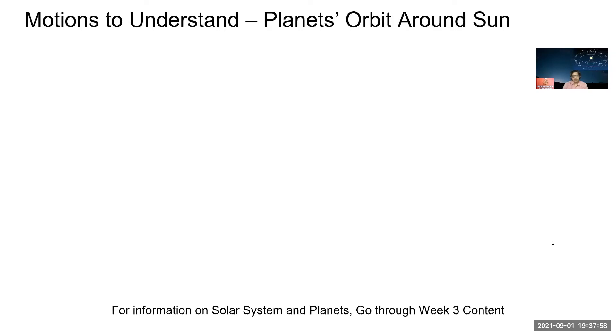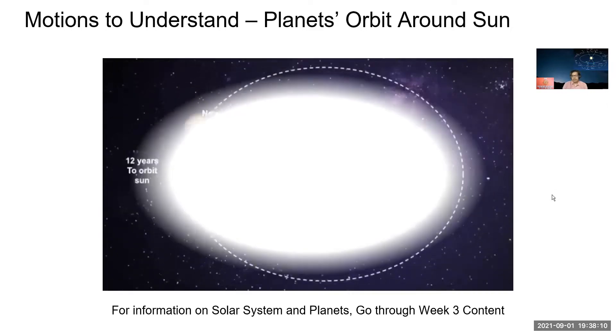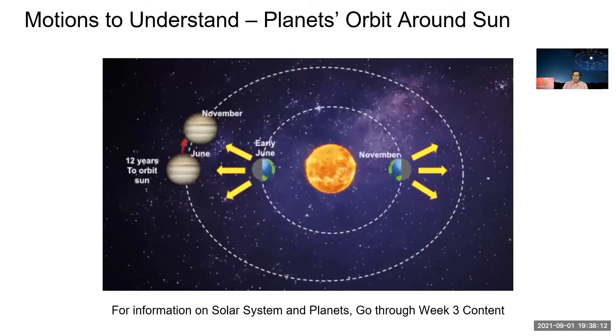Next motion we should be aware of is the other planets we have seen earlier. I'm just illustrating here with one example, Jupiter, to highlight a difference. For example, Earth in six months goes from June to November to the other side on its orbit, but Jupiter which takes 12 years to orbit just moves this much in that time. Just to be aware that different planets have different orbital revolution periods.